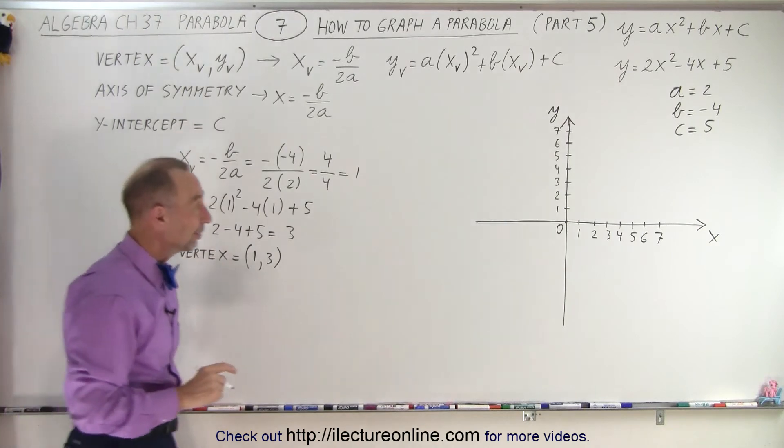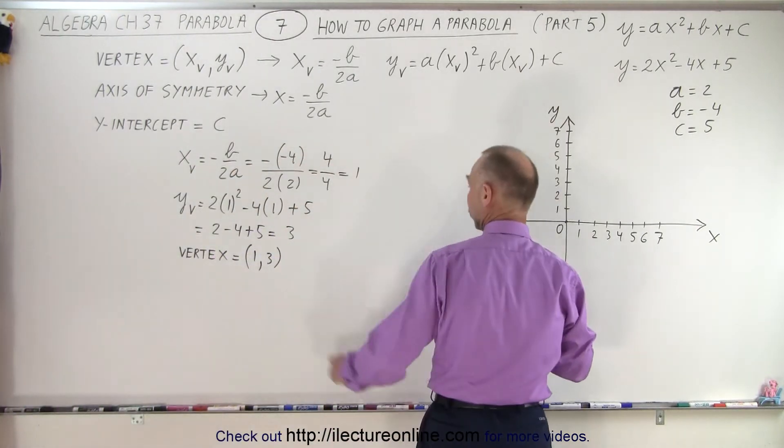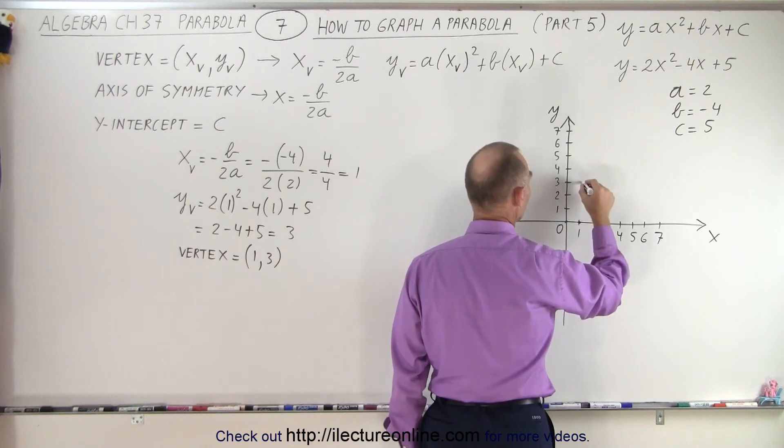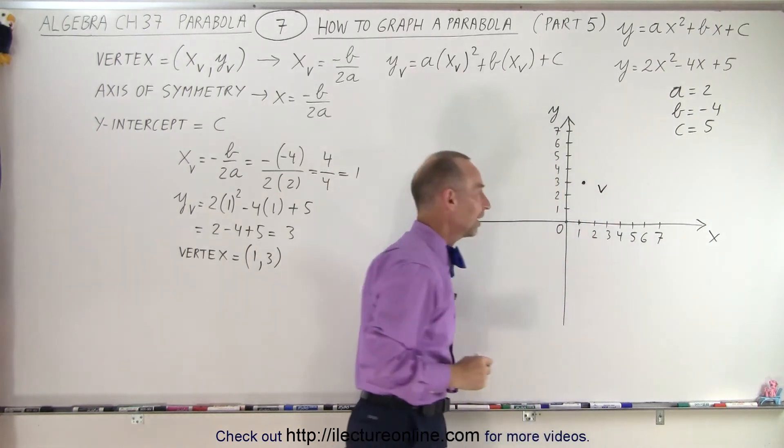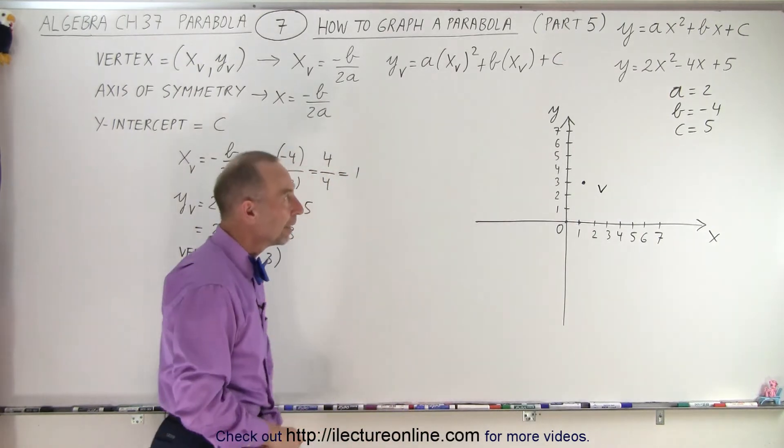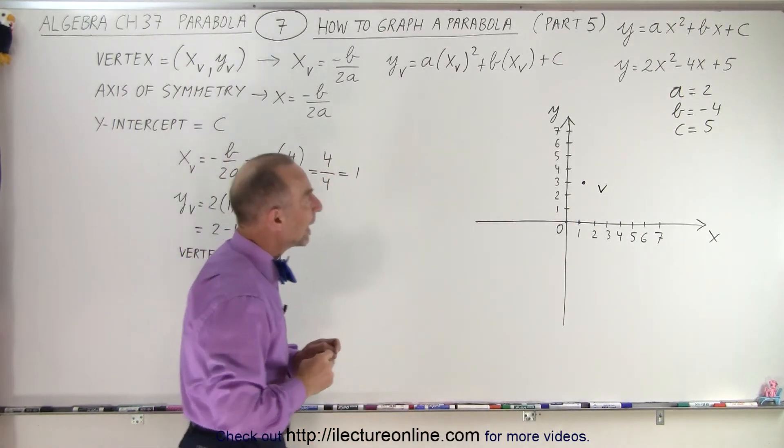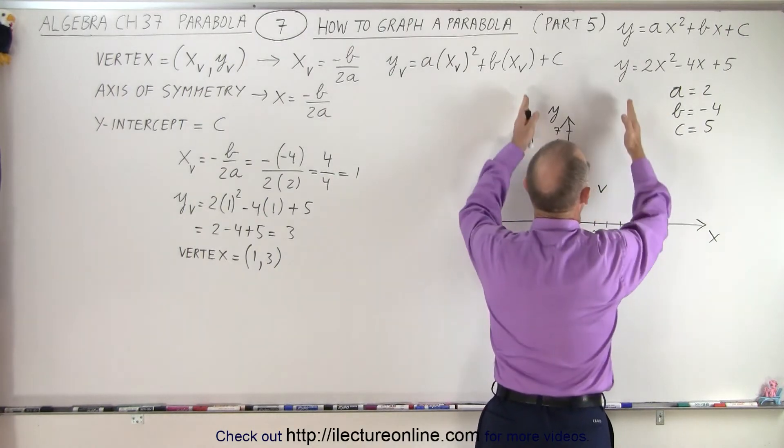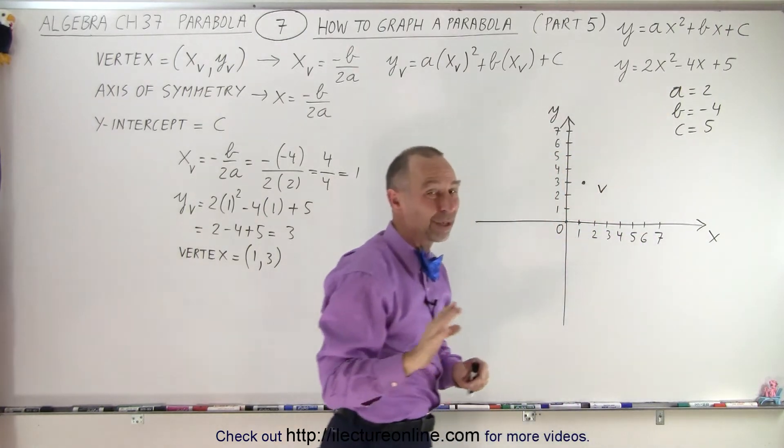And that is easy to find on our x-y-axis. So the vertex 1, 3, 1 is over here, 3 is over here, so this is where the vertex is. So let's just put a v for vertex at that location. Now we look at the value for a, and notice that a is positive, which means we know that the parabola opens upward. But before we graph it,